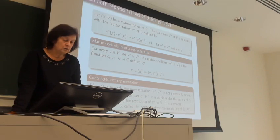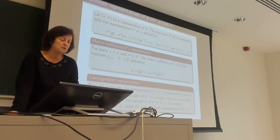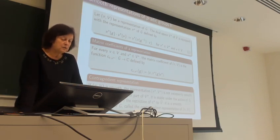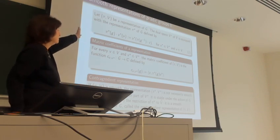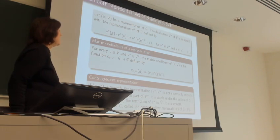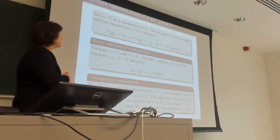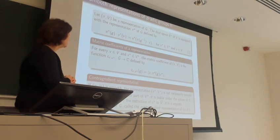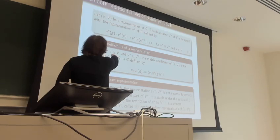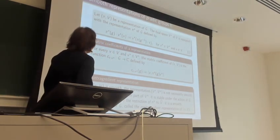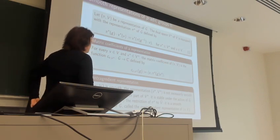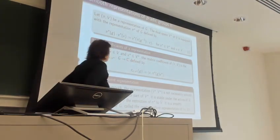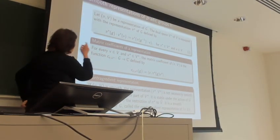I can also consider the dual representation, with the usual notion of dual: the space of homomorphisms from V to C. This dual space V* can be equipped with a representation in the natural way. This is useful because it allows me to introduce the notion of matrix coefficient: I fix two vectors v in V and v* in V*, and define the matrix coefficient C_{v,v*} as the smooth function from G to C given by v* applied to pi(g)v, for any g in G.